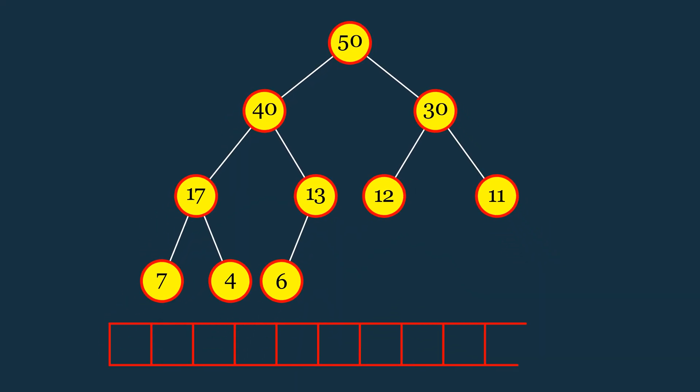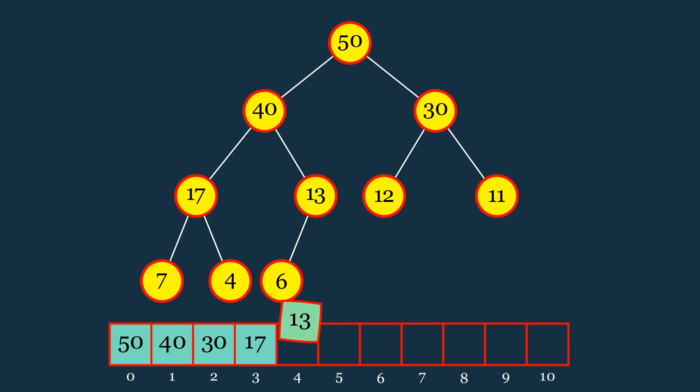Since a heap is a complete binary tree, it can be stored efficiently using an array instead of traditional nodes and pointers. This array representation makes heaps very efficient for operations like insertion and deletion. First, we store the root node at the zeroth index of the array. Then, we add its left child, followed by its right child, and continue in this manner, level by level, from left to right.